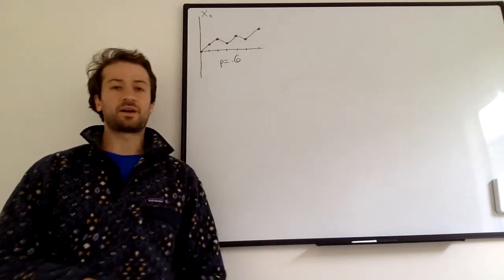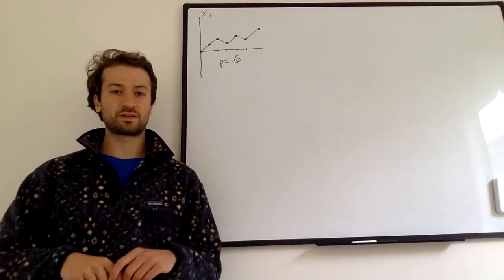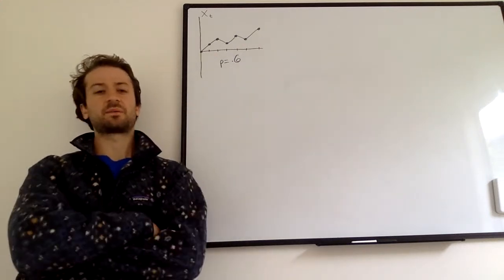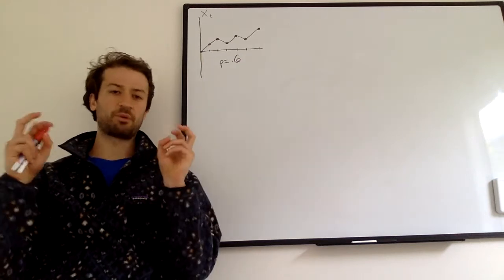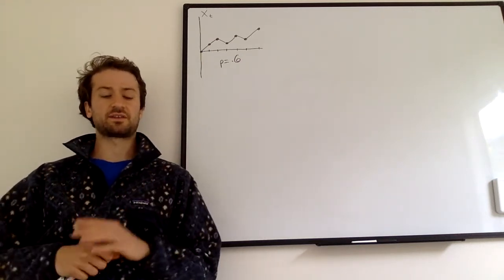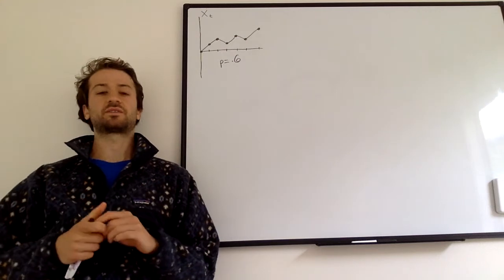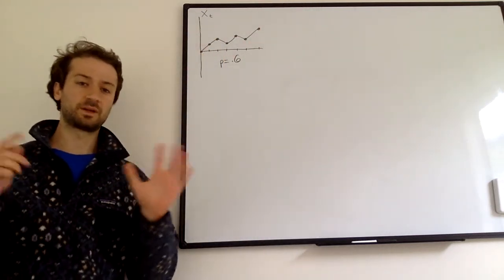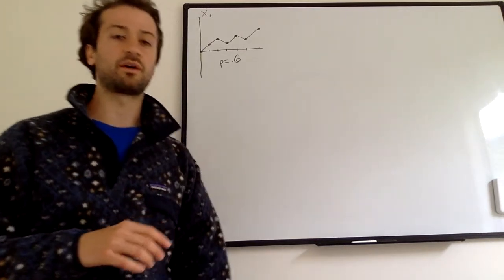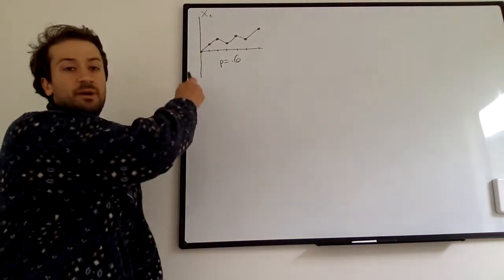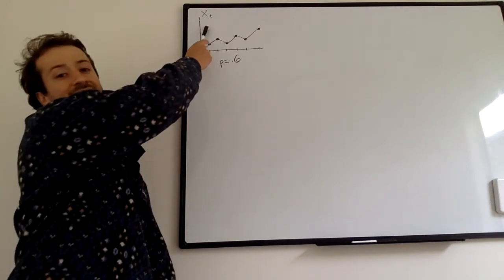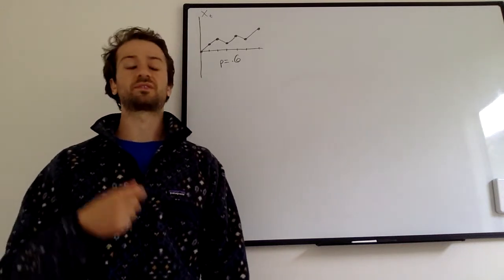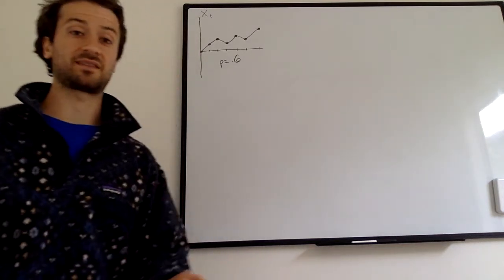Welcome. Today we're going to be talking about simple random walks, which are stochastic processes that hopefully you're relatively familiar with. We're going to be talking about hitting probabilities — the probability that a simple random walk will ever achieve a certain level. But before we do that, let's do a quick overview of simple random walks. I've drawn one up here, labeled X sub T. The T indicates that this random variable is indexed to time, which is what makes a stochastic process.